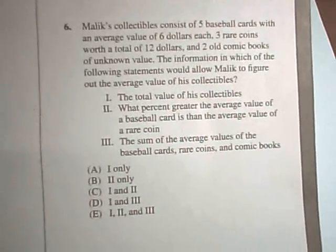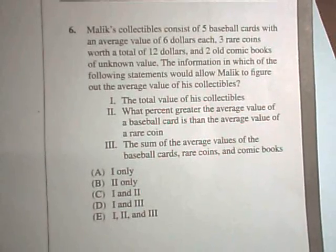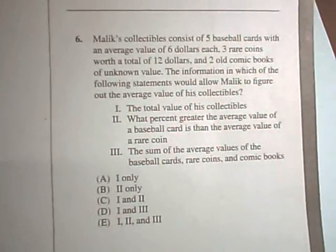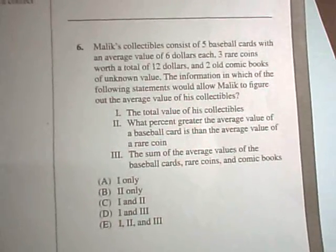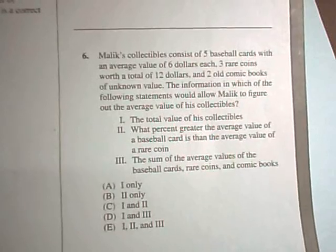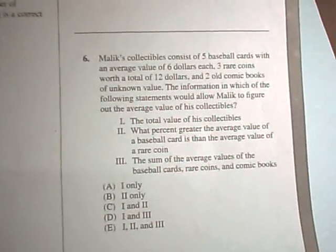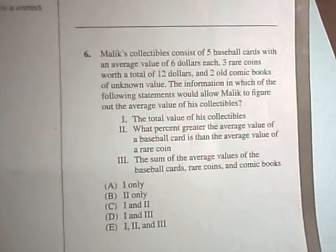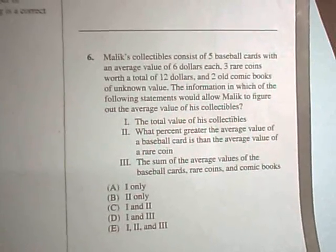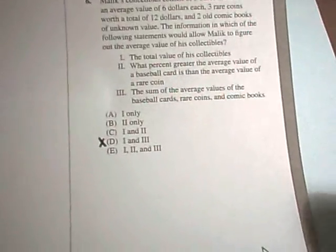Likewise, part three would be enough because we've got a value. We could basically, from that, figure out the average value of his comic books, if we know the average value of everything. I don't think two is going to be enough, though. It says what percent greater than the average value of a baseball card is the average value of a rare coin? That still doesn't really tell us anything about the price of the comic books, and that's one of the unknown things in here. So, I think one and three will be enough for us to figure everything out, but two is not enough because it doesn't relate anything to the value of his comic books, and that's what's missing in this problem.